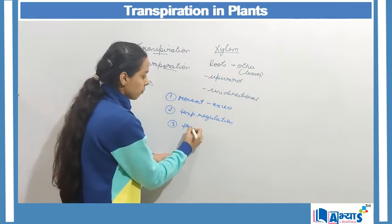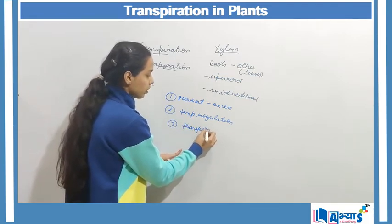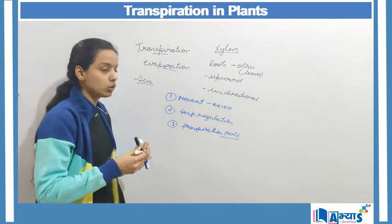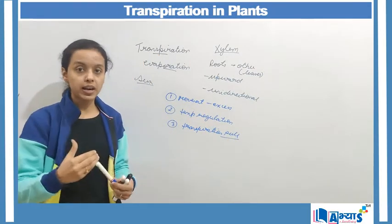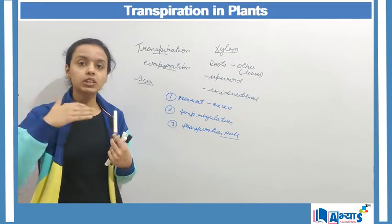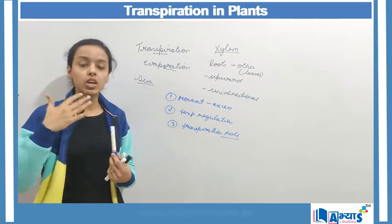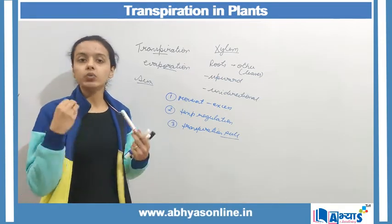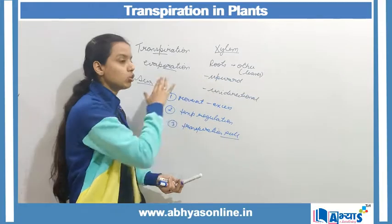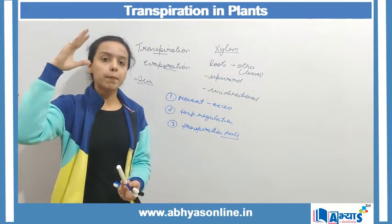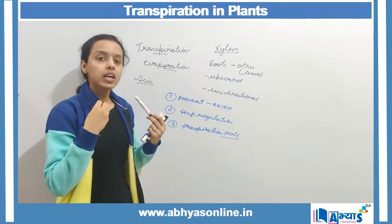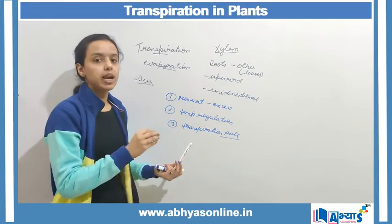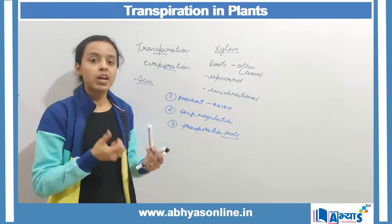The third important function of transpiration is the transpiration pull. Transpiration pull refers to the upward movement of water in very tall trees. When a tree is very tall, it becomes difficult for the xylem vessel to transfer water to the topmost tip of the plant, so that transportation is aided by the transpiration pull.